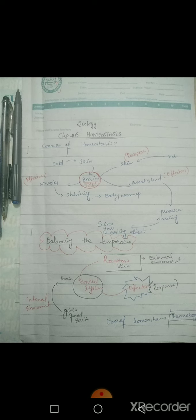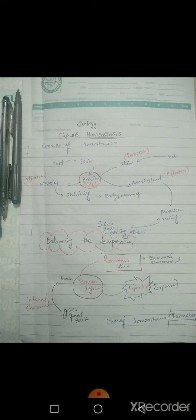First of all, we will define the concept of homeostasis. Homeostasis is the protection of the internal environment from the harmful fluctuations in the external environment — the protection of the internal environment of the body. The best example of this is the summer season.